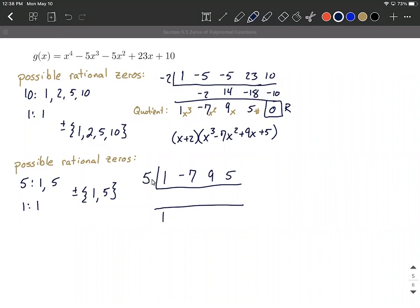So the 1 comes down, we're going to multiply, 5 times 1 makes 5, add vertically, so negative 7 plus 5 makes negative 2, multiply, 5 times negative 2 makes negative 10, add negative 1, multiply negative 5, and again, we ended up with a remainder of 0.